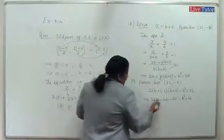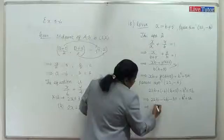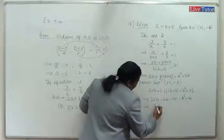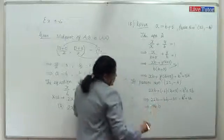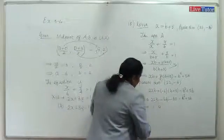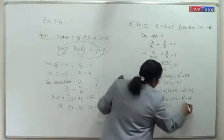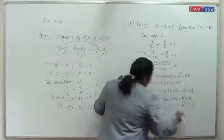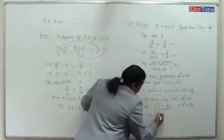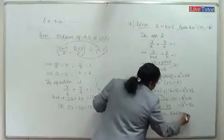22b minus 6b is 16b, so 16b minus 30 equals b squared plus 5b. Rearranging to the right side: b squared plus 5b minus 16b plus 30 equals 0.